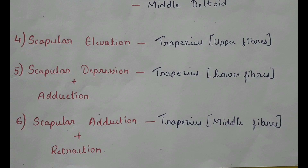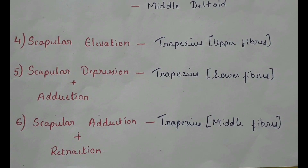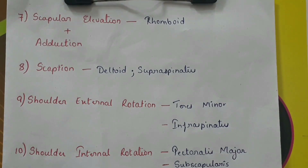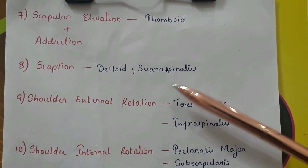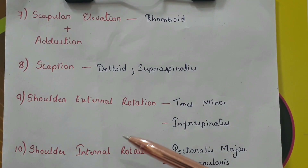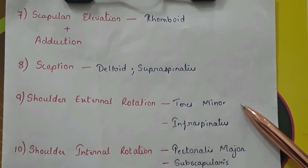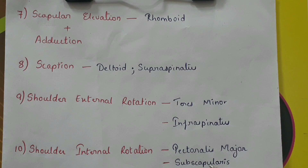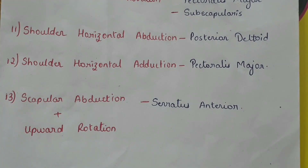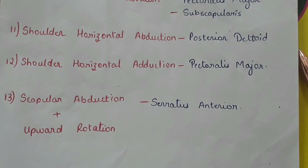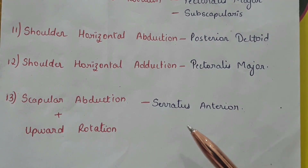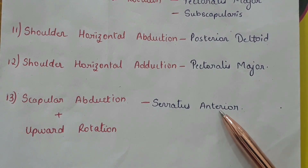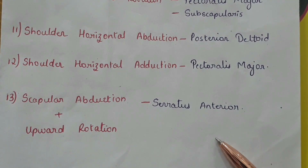Scapular adduction and retraction: trapezius middle fibers. Scapular elevation and adduction: rhomboids. Scaption by deltoid and supraspinatus. Shoulder external rotation by teres minor and infraspinatus. Shoulder internal rotation by pectoralis major and subscapularis. Shoulder horizontal abduction: posterior deltoid. Shoulder horizontal adduction: pectoralis major. Scapular abduction and upward rotation: serratus anterior, also called the boxer's muscle.